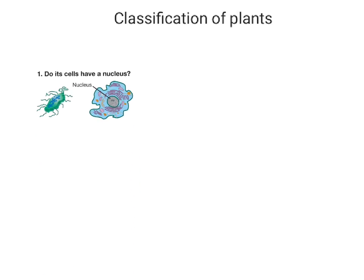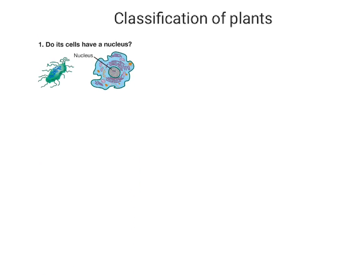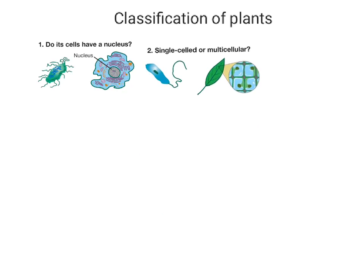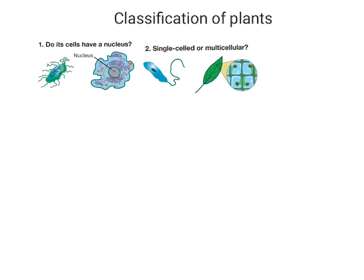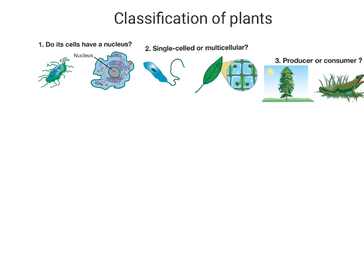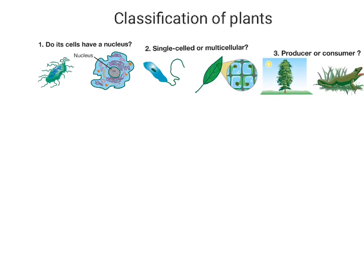Today we're going to learn about the classification of plants. A few months ago we learned about how scientists, when they discovered new organisms, would have to ask three questions. That first question was: does the organism's cells have a nucleus or not — are they prokaryotic or eukaryotic? Next they would ask, is it a single-celled or multicellular organism? And then last, is it a producer or consumer — can it produce its own food through photosynthesis, or can it consume another organism for food?